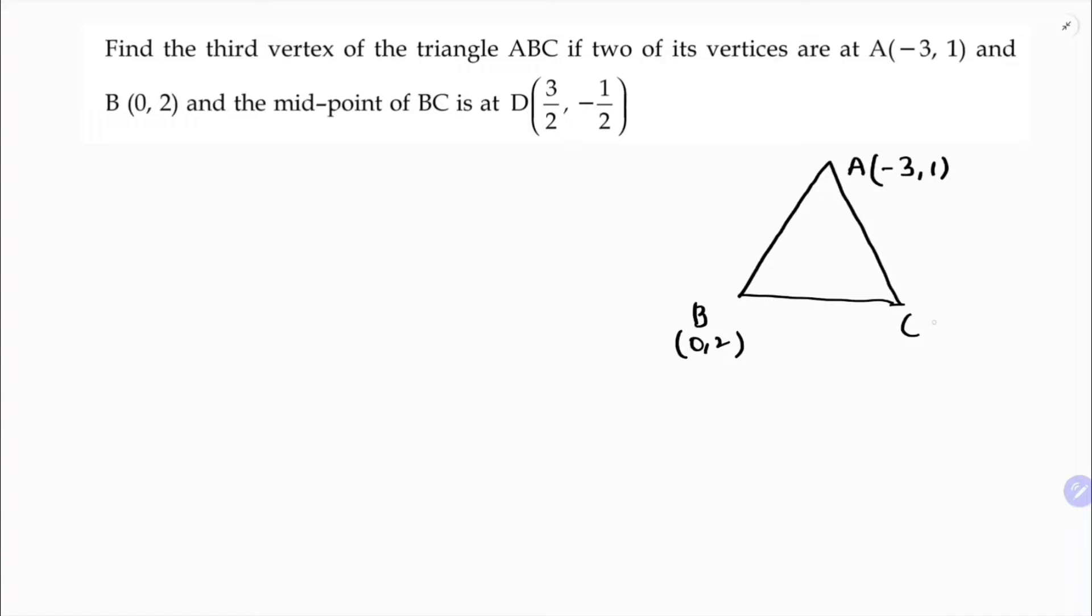I need to find the third vertex, which I'll consider as (a, b), and the midpoint of BC. This midpoint of BC is D and its value is (3/2, -1/2).